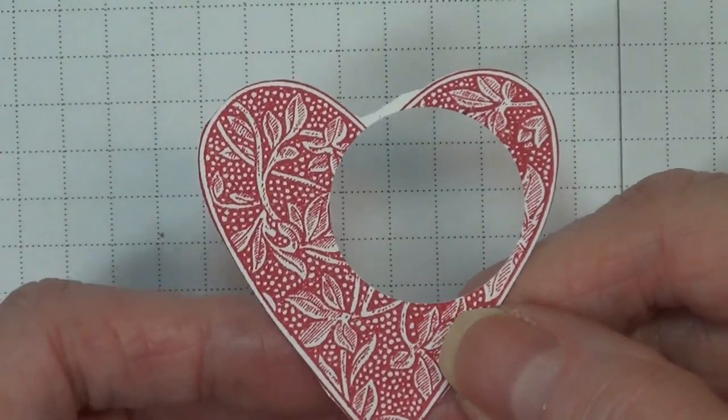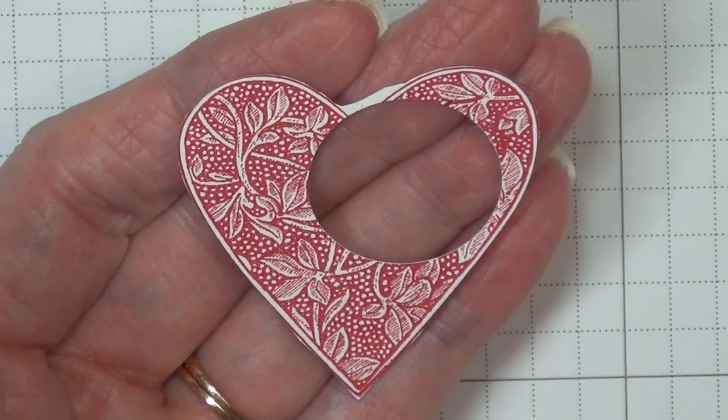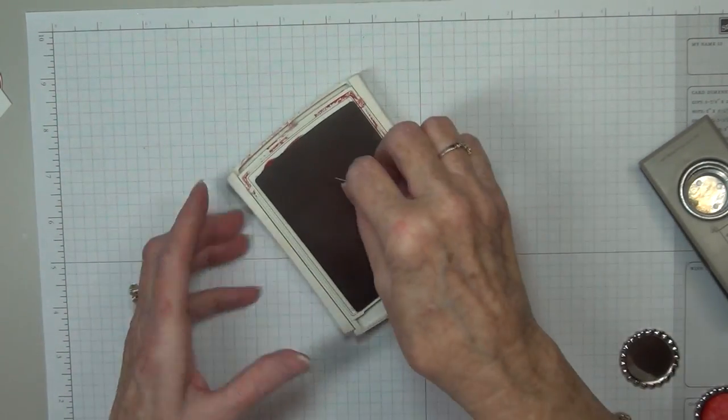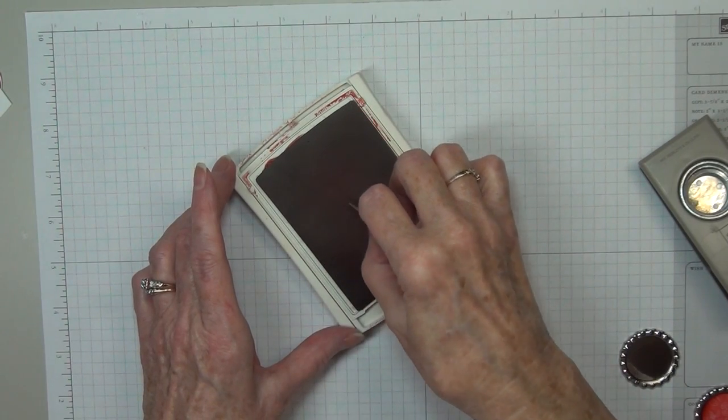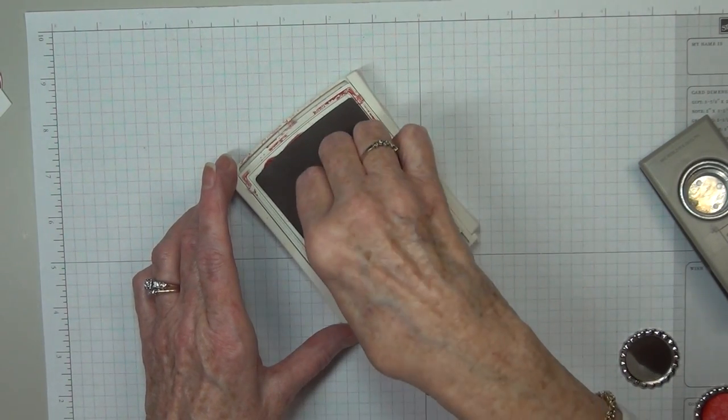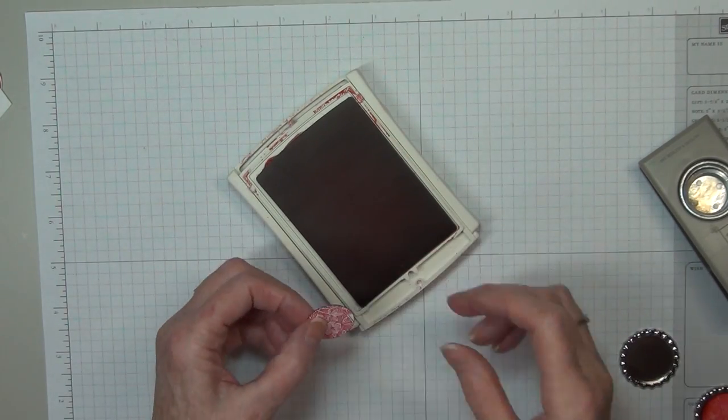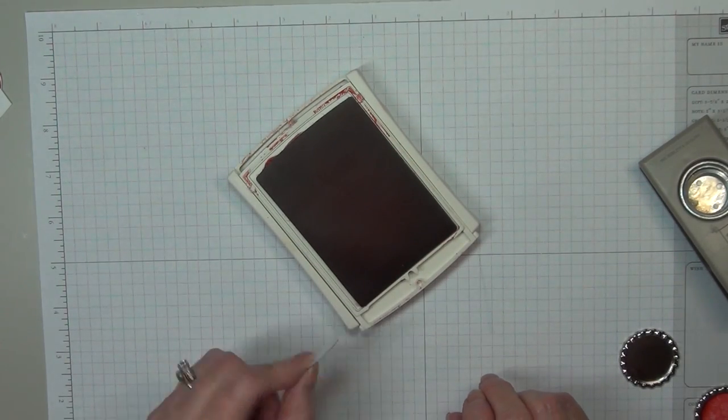Now you take your one inch circle that you've just punched out and roll that in the real red ink on that one little spot where the white is showing. Just tap it ever so lightly onto your pad. Then let that dry for just a few seconds.